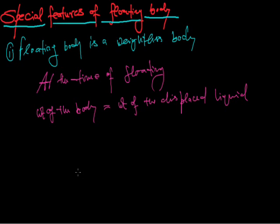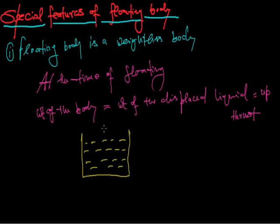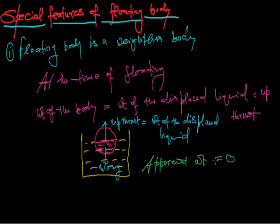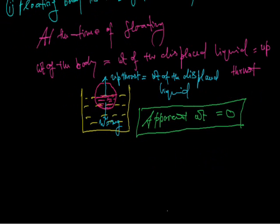The weight of the body acts in the downward direction (W = mg), and the upward thrust, that is the buoyant force, acts in the upward direction. At the time of floating, both are equal and opposite, so the apparent weight will be zero. Therefore, the floating body is said to be in a weightlessness condition — a floating body is a weightless body.